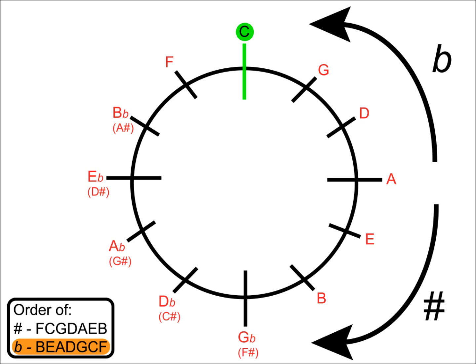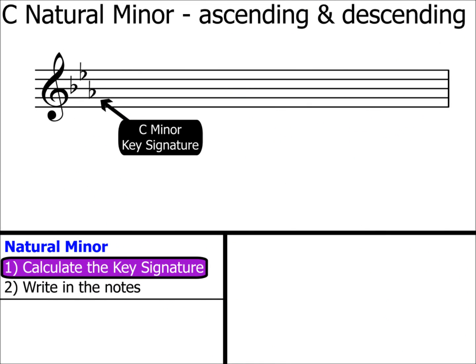Let's look at our order of flats. We take the first 3 letters, B, E and A. They become B flat, E flat and A flat. Let's pop that key signature onto our stave. Step 1 is now complete.